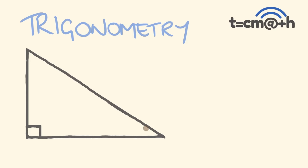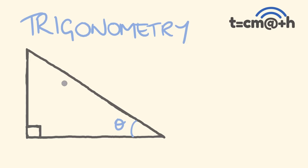So how does it do this? It's fairly simple. If we consider an angle here in this triangle — this angle here is called theta — for this particular angle in a right angle triangle, these two side lengths would have a particular ratio. They would always be an equivalent length compared to one another. This length and this length would have a certain ratio, and trigonometry uses this to work out unknown side lengths and unknown angles.